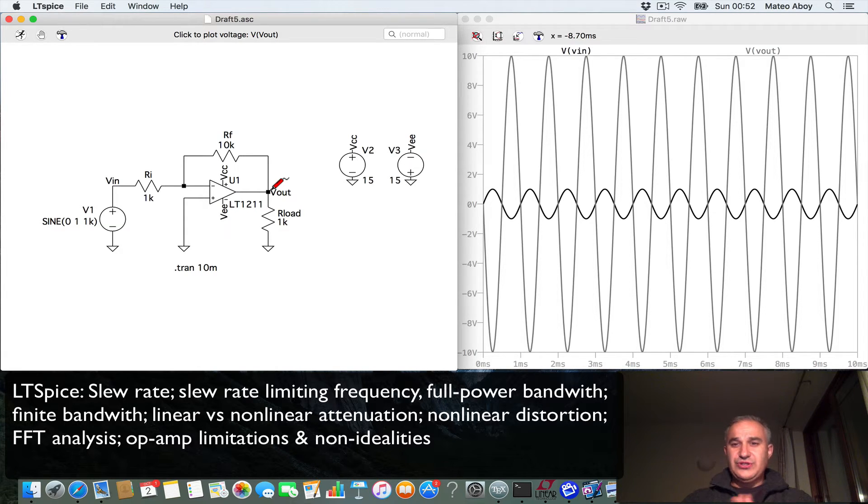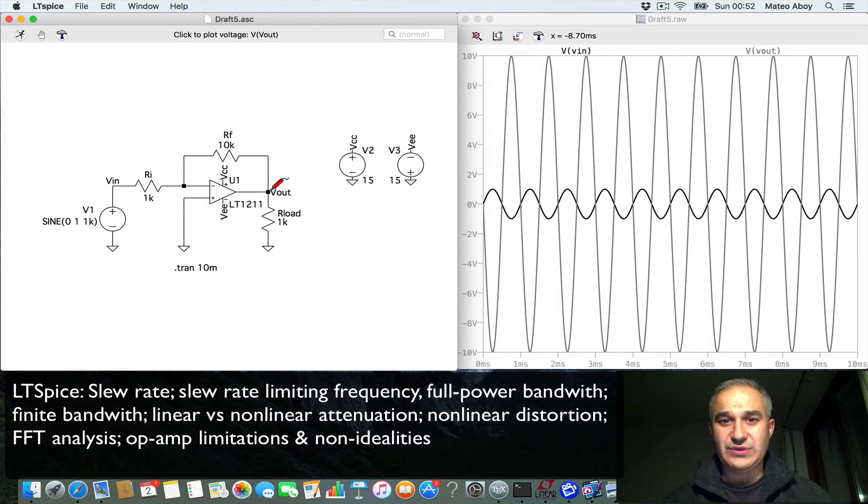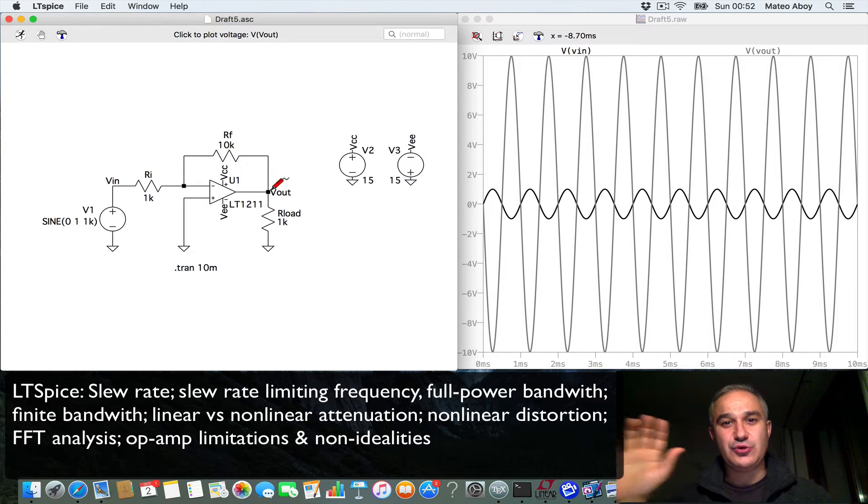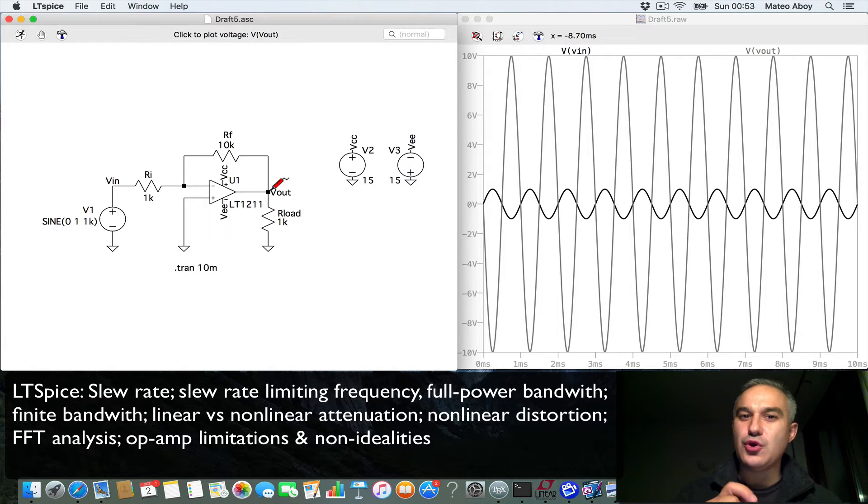So we saw already before that as we increase the frequency we get an attenuation and that attenuation is due to the finite bandwidth. And that finite bandwidth of operational amplifiers is actually a linear phenomenon. For a sinusoidal input you still get a sinusoidal output. But as we increase the frequency you also have another limitation which is due to the slew rate. And this is a non-linear effect. It creates a non-linear distortion. And we can see it here, although we are confounding both of them. There's a better task that we can design.